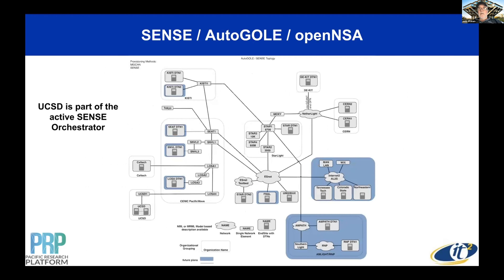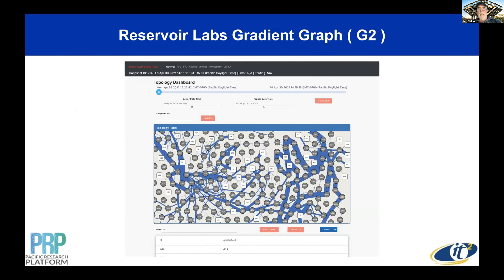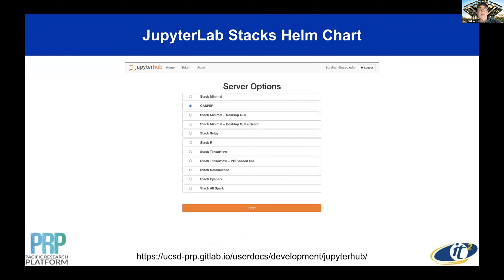These slides show the current state of SENSE and AutoGOLE connections internationally. This is Reservoir Labs' Gradient Graph — the topology view of some of the next-generation cutting-edge diagnostic tools we're going to be integrating with P4. And this shows the Jupyter stacks, including the landing page for the Casper instance that we deployed.